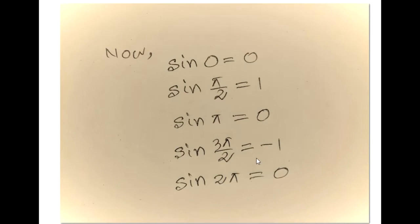Then we know that the value of sin 0 is 0, sin pi over 2 is 1, sin pi is 0, sin 3pi over 2 is minus 1, and sin 2pi is 0.